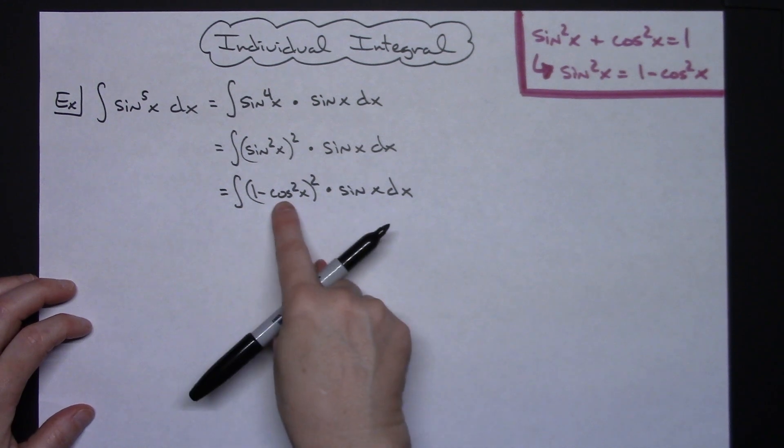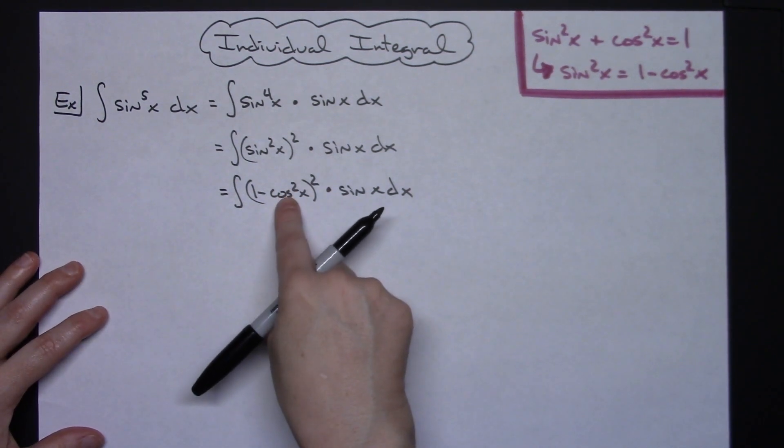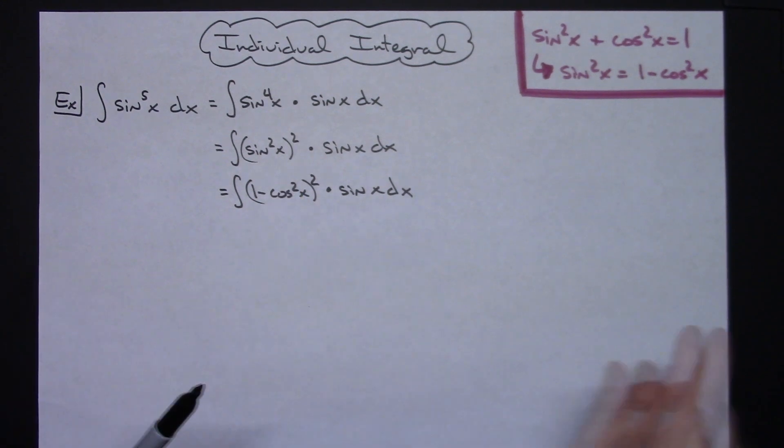Now at this point hopefully you can see that this is going to have the inside function of cosine x. This is cosine x times cosine x, cosine x squared. So I'm going to let my u be cosine x.